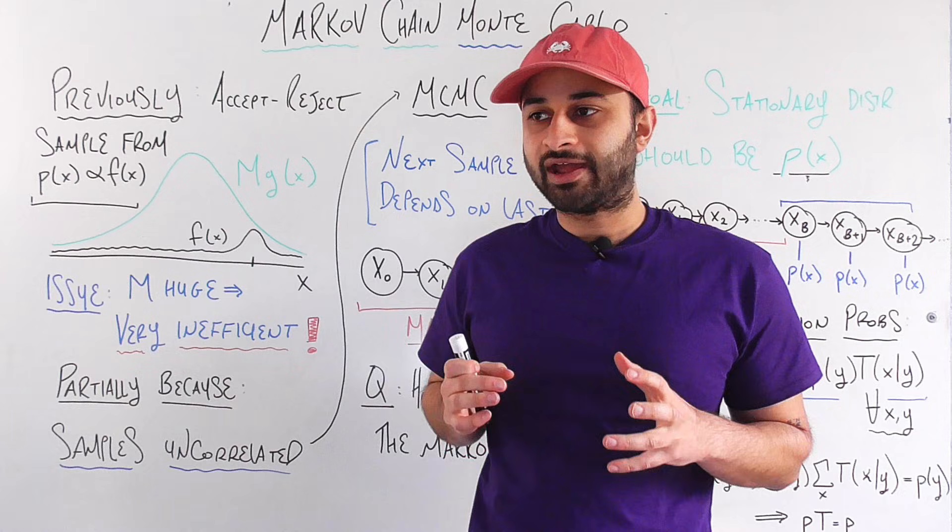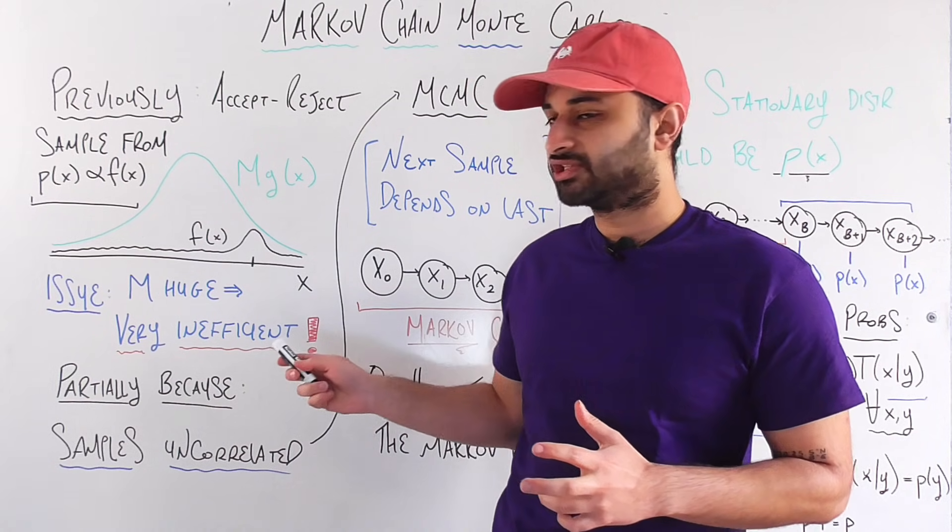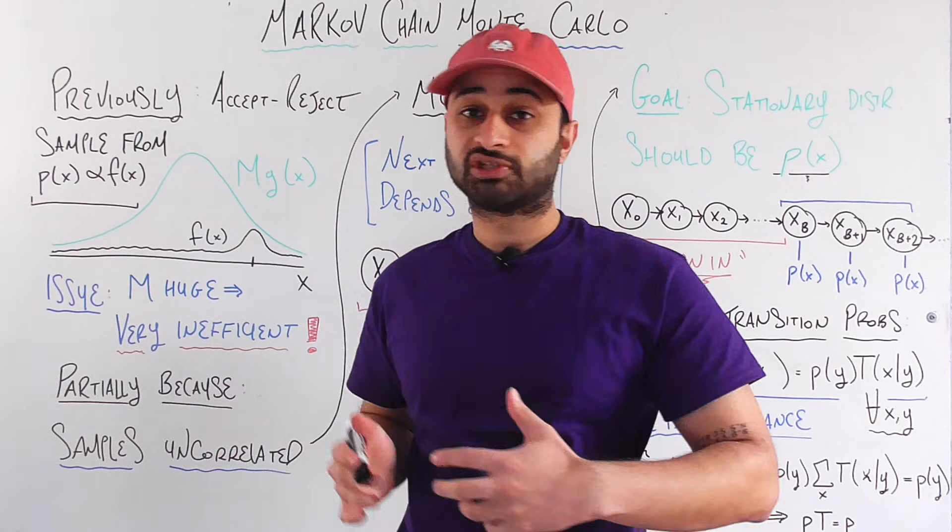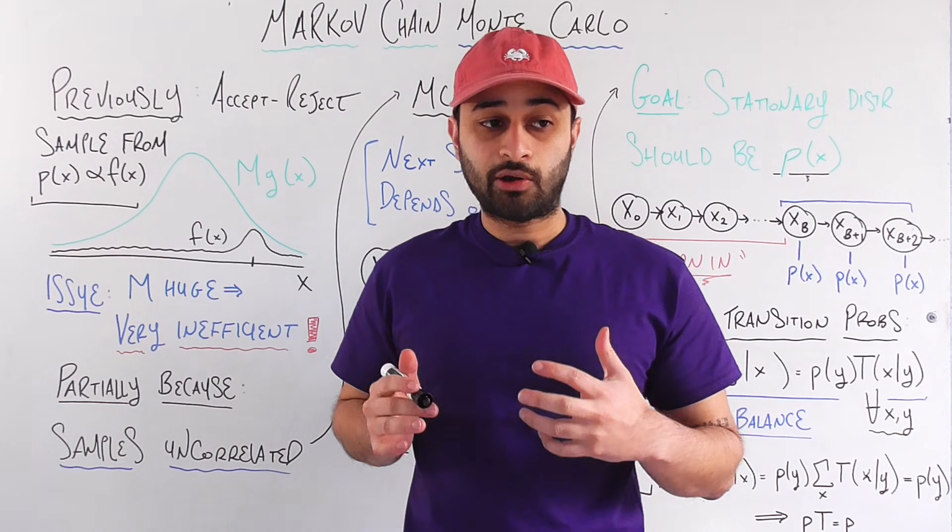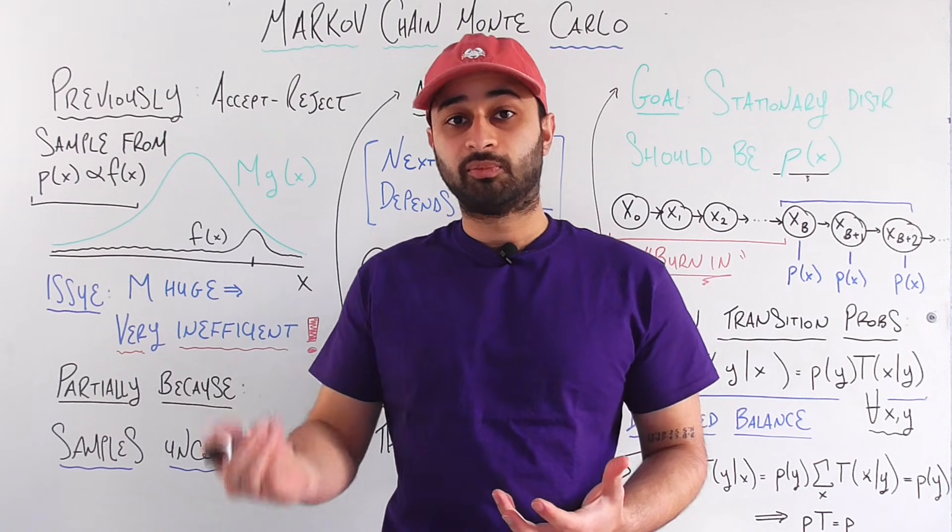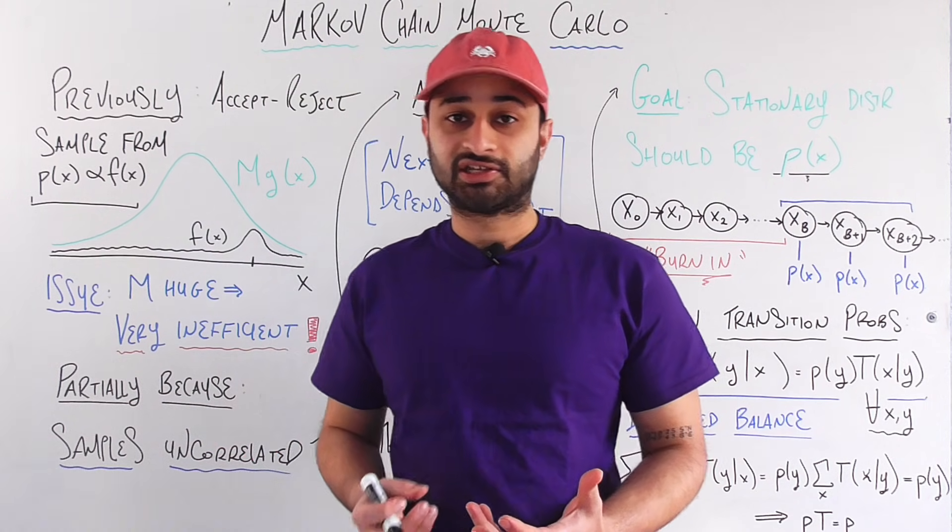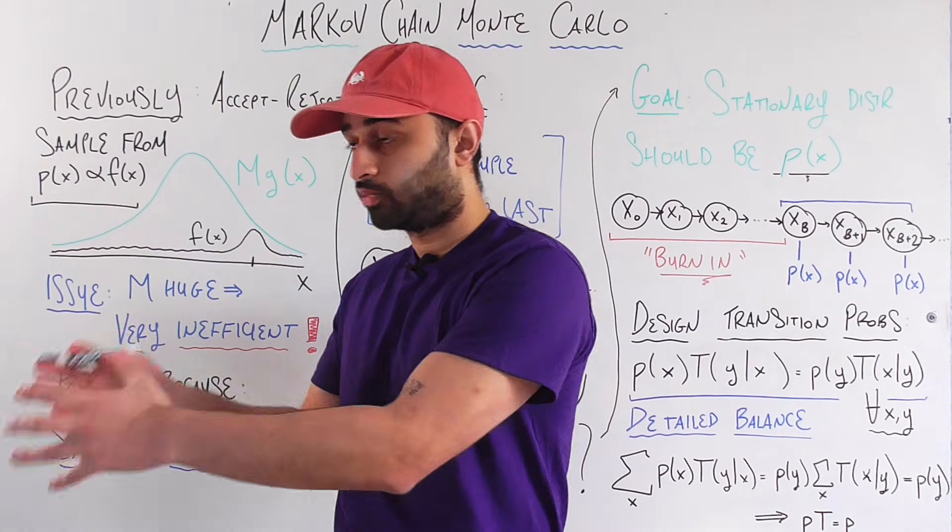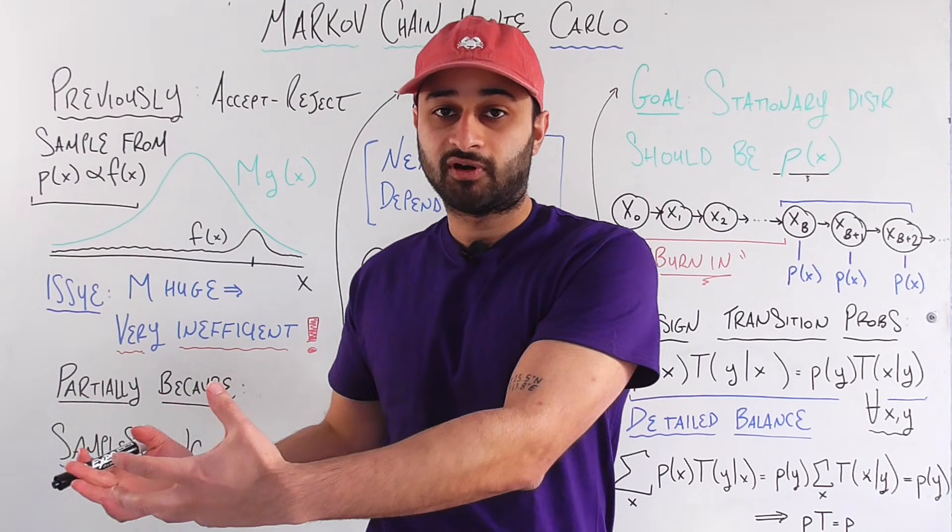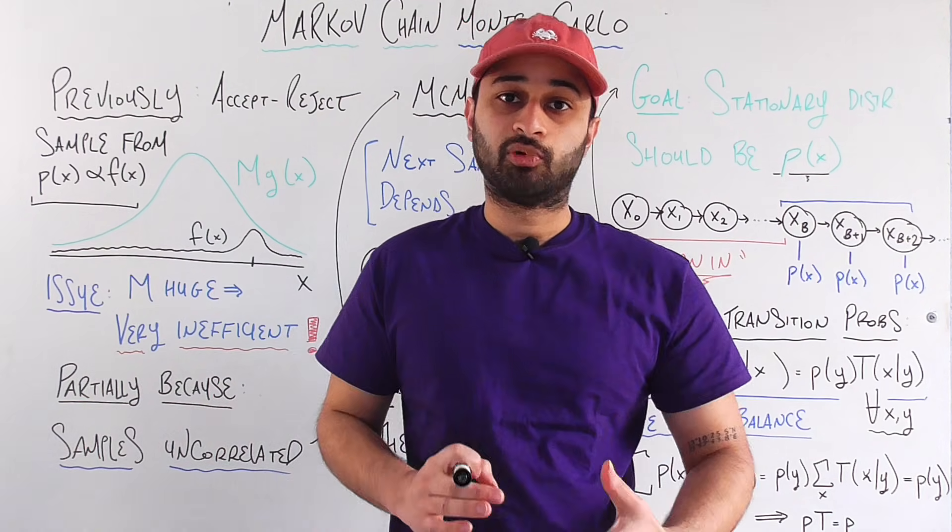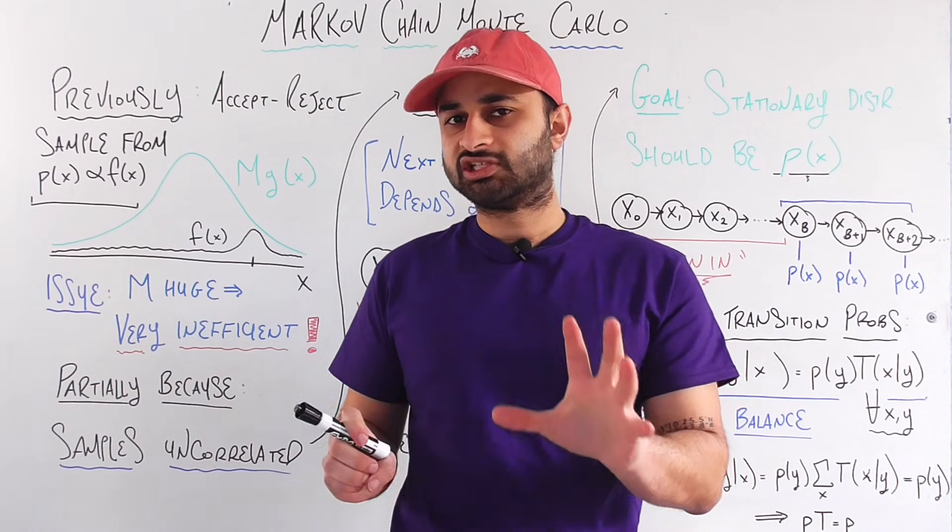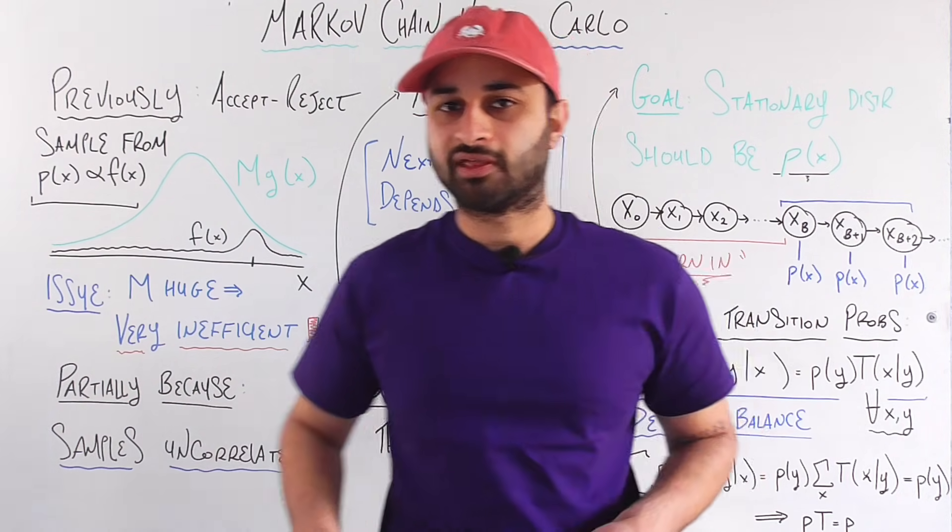And so here's where MCMC comes in. MCMC comes in and says I understand that part of this issue is arising because the samples you're getting are uncorrelated, we're not learning anything from the previous samples that we've collected. So we are now going to design a method called MCMC which is going to learn from the previous samples it has collected, more specifically it's going to look at the previous sample itself, so what's the last sample I saw, it's going to learn something from it and it's going to pick the next sample based on that, so they are no longer independent. That is actually one of the disadvantages of MCMC but we'll come back to that at the end of this video.